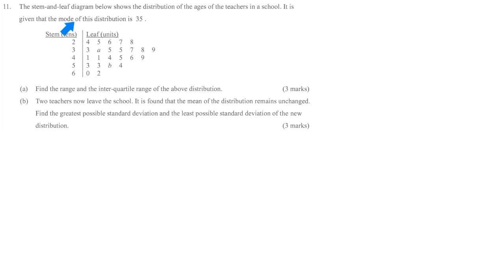From this stem and leaf diagram, we know that the mode of this distribution is 35, which means 35 is the most common result here. You'll find that 35 already appeared twice. At the same time, we also find 53 appeared twice.